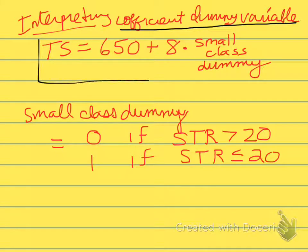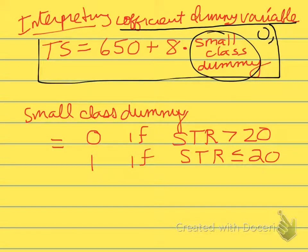We might take as our example the regression where we have test score as the outcome variable, and we have a dummy variable, let's call it small class dummy, as the explanatory variable. This dummy variable takes on values 0 or 1, takes on a value 1 if it is indeed a small class.